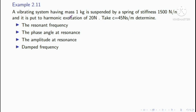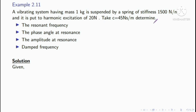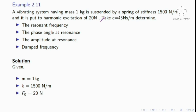Next problem: a vibrating system having mass 1 kilogram is suspended by a spring of stiffness 1500 Newton per meter and it is put to harmonic excitation of 20 Newton. Take c equal to 45 Newton second per meter. Determine resonant frequency, phase angle at resonance, amplitude at resonance, and damped frequency. Given: mass m equal to 1 kilogram, stiffness k equal to 1500 Newton per meter, external force f0 equal to 20 Newton.